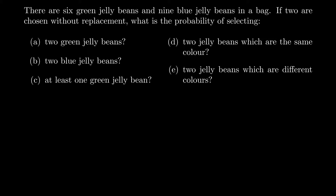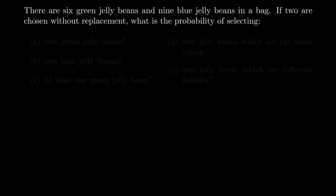There are six green jelly beans and nine blue jelly beans. Two are chosen without replacement — that means we take our first one but don't put it back, then take the second one straight after. Let's make sense of just the experiment first: six greens and nine blues.